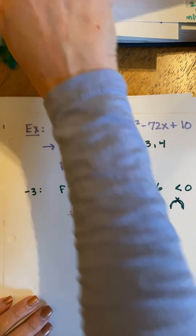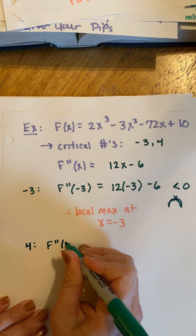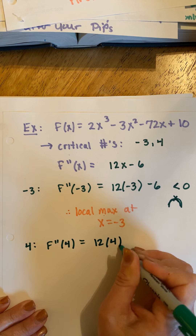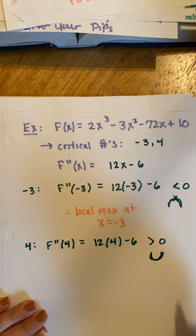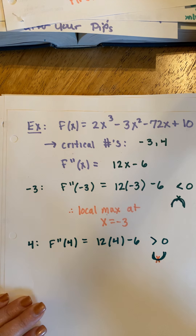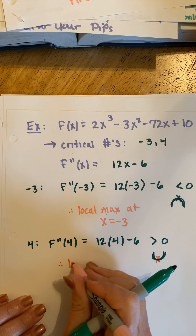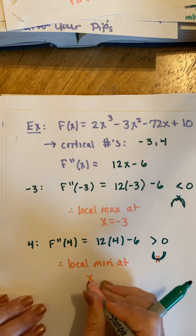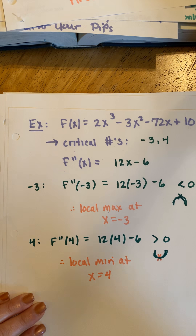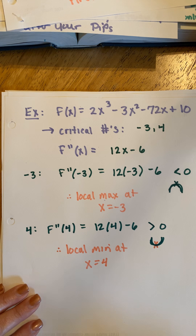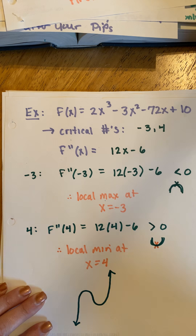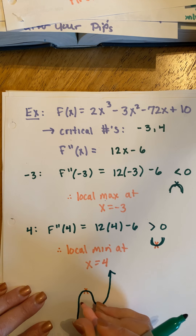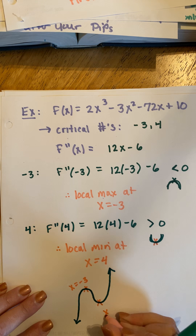Then we stick 4 into our second derivative. The result is 48 minus 6, which is 42. All I care is that it's positive — if the second derivative is positive, the function is concave up there, and since it's a critical number, it must be a local min. So we have a local min at x equals 4. If you go back in your notes and see when we used the first derivative test, this is in fact the same result. This is a cubic function — we had a local max at negative 3 and a local min at x equals 4.